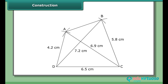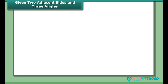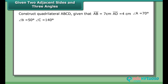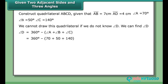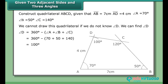Then ABCD is the required quadrilateral with diagonals AC and BD. Given two adjacent sides and three angles, construct quadrilateral ABCD with AB = 7 cm, AD = 4 cm, angle A = 70°, angle B = 50°, and angle C = 140°. We cannot draw this quadrilateral if we do not know angle D. We can find angle D: angle D = 360° − (70° + 50° + 140°) = 100°.